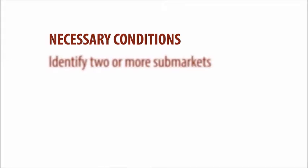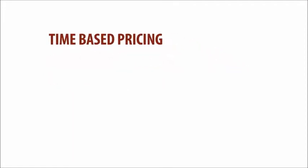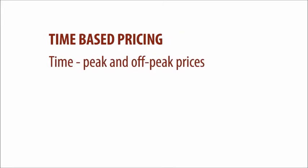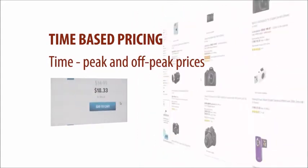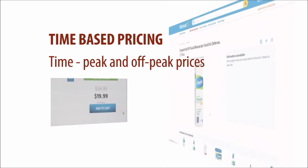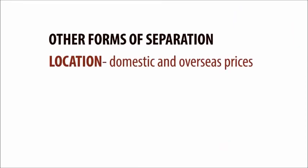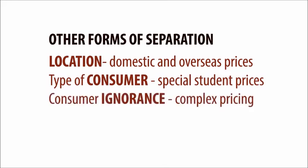Third-degree price discrimination requires certain conditions. The firm must be able to identify different sub-markets, and those sub-markets must be kept apart. This can be done by time — such as peak and off-peak pricing — which is increasingly common with goods and services sold online, where prices can change by the minute as consumers reveal their preferences. Another common way to separate a market is by physical distance, selling an identical product at a higher price in one city than another. Separation can also be based on the type of consumer, or by exploiting consumer ignorance through complex pricing structures.